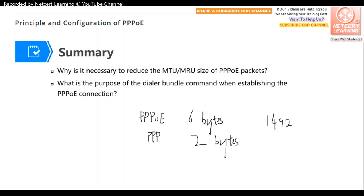Review question two: What is the purpose of the dialer bundle command when establishing a PPPoE connection? Routers do not have a physical dialer interface, so a logical dialer interface must be created and assigned a dialer bundle number. Since real traffic must be carried on a physical Ethernet interface, the dialer bundle command in the physical interface configuration is used to bind the physical interface to the logical dialer interface.